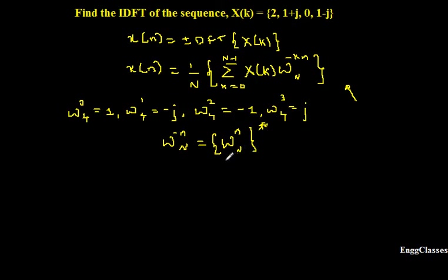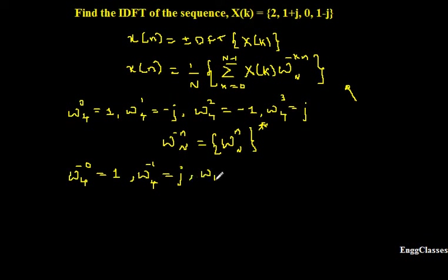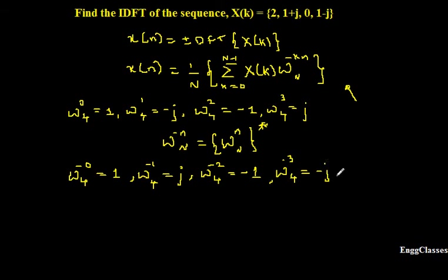To find the complex conjugate: if there is any imaginary part, change its sign; if there is a real part, just keep it as it is. So W4 to the power minus 0 remains 1 — no change. W4 to the power minus 1: W4^1 was minus j, so its complex conjugate becomes plus j. W4 to the power minus 2: W4^2 was minus 1, and since it has no imaginary part, it stays minus 1. Lastly, W4 to the power minus 3: it was plus j, so now it becomes minus j.